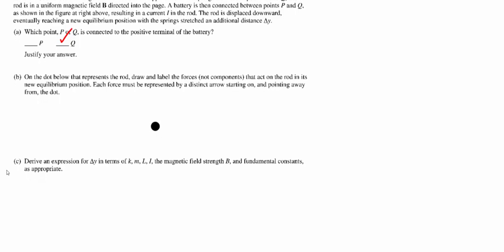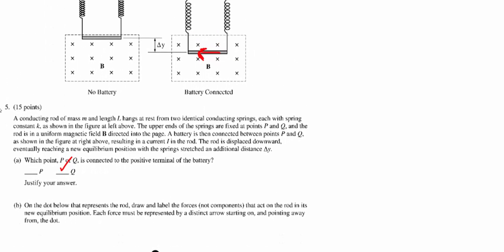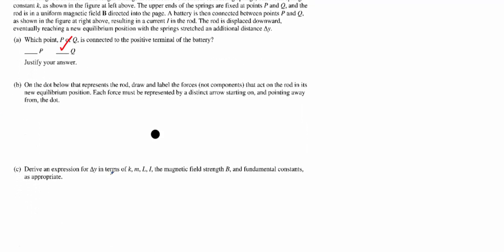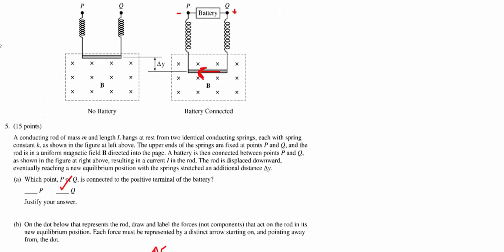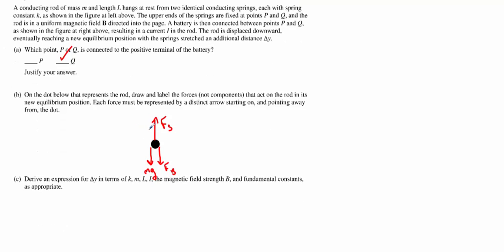On part B, we want to write a free body diagram. We want to indicate the forces acting on this rod at that spot. Well, hopefully you don't forget your original forces that were there. You have your weight, which is down, mg or F sub g is fine. You're also going to have the magnetic force, which is down, or else the rod wouldn't have gone down, right? And then you have the net spring force, which is up. Just understand if you draw the one arrow, you have to recognize that it's coming from two springs. You could have just as easily drawn FS1 and FS2 here. It really means the same thing.